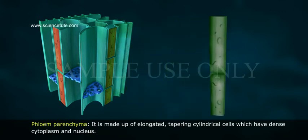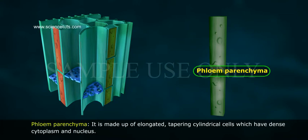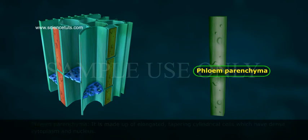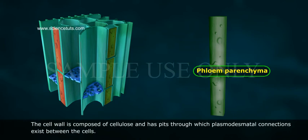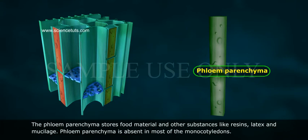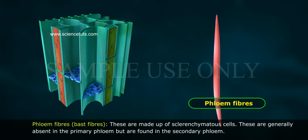Phloem parenchyma is made up of elongated, tapering cylindrical cells which have dense cytoplasm and nucleus. The cell wall is composed of cellulose and has pits through which plasmodesmata connections exist between the cells. The phloem parenchyma stores food material and other substances like resins, latex, and mucilage. Phloem parenchyma is absent in most monocotyledons.